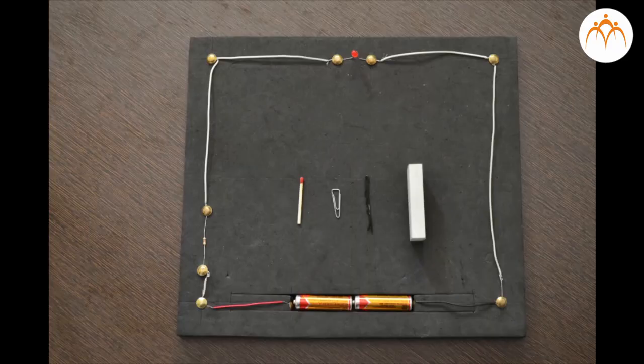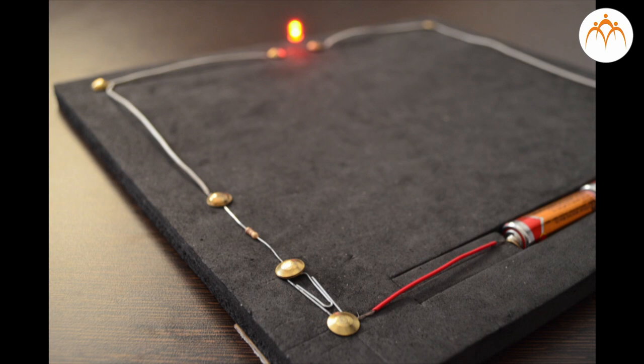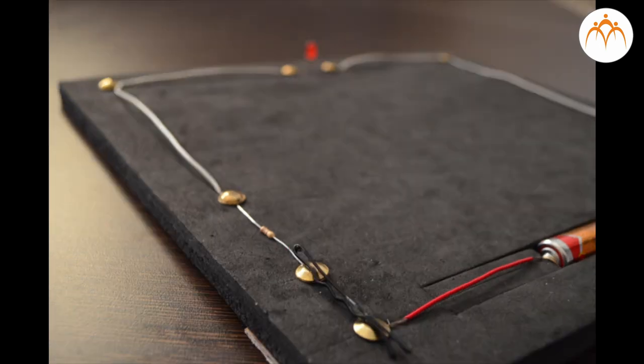Conductors are materials that permit electrons to flow freely, while insulators are materials that impede the free flow of electrons. A simple circuit is built with two double-A batteries and an LED, and different materials are connected in series to find out if they are conductors or insulators.